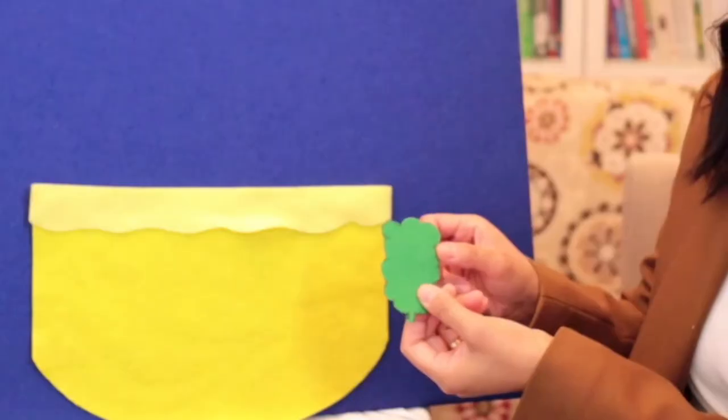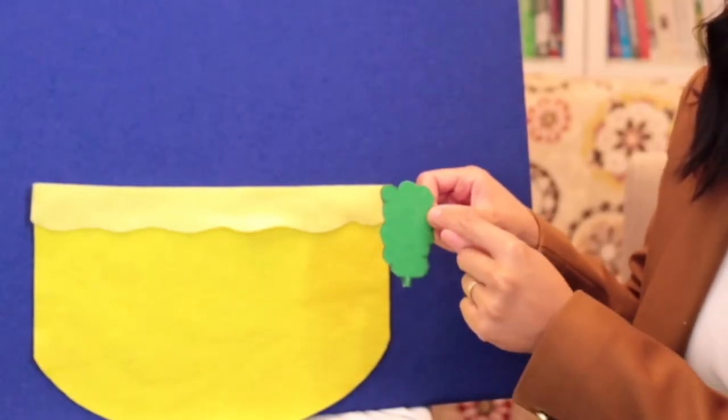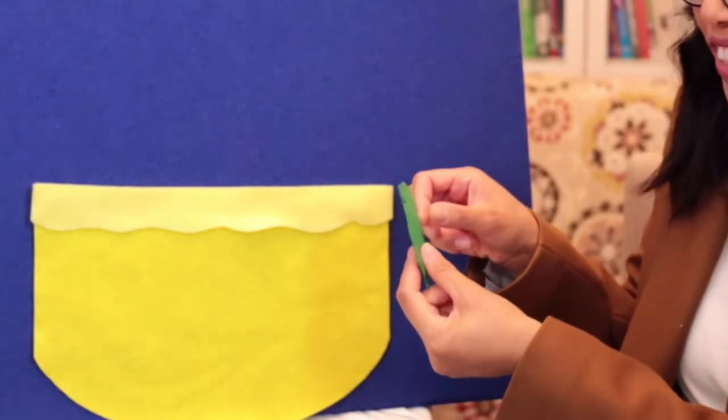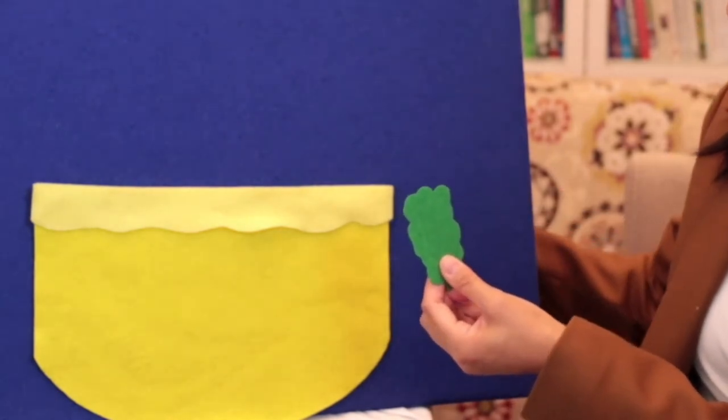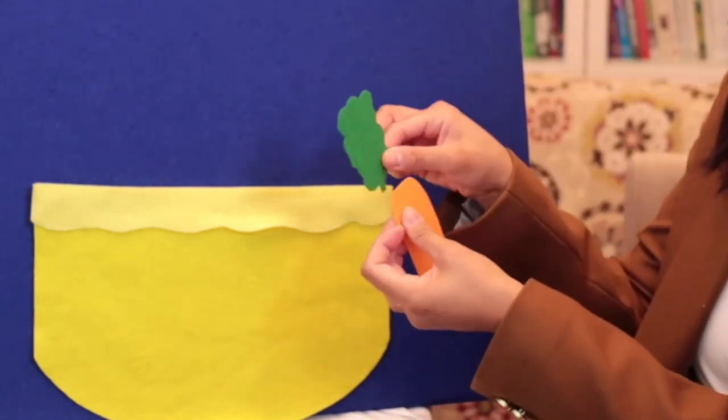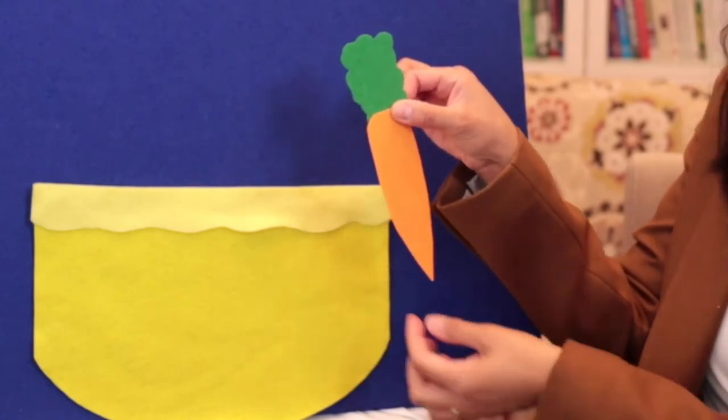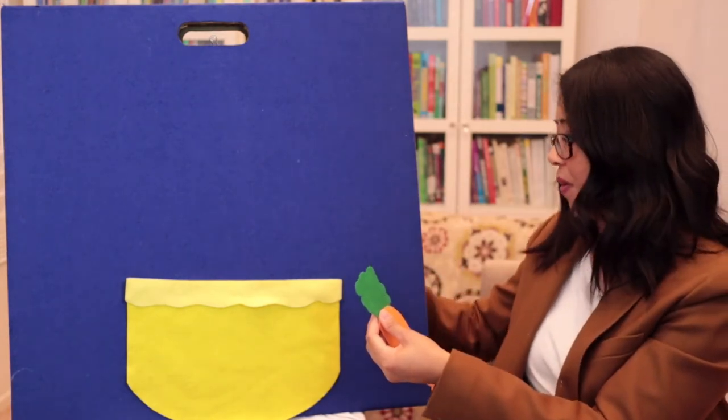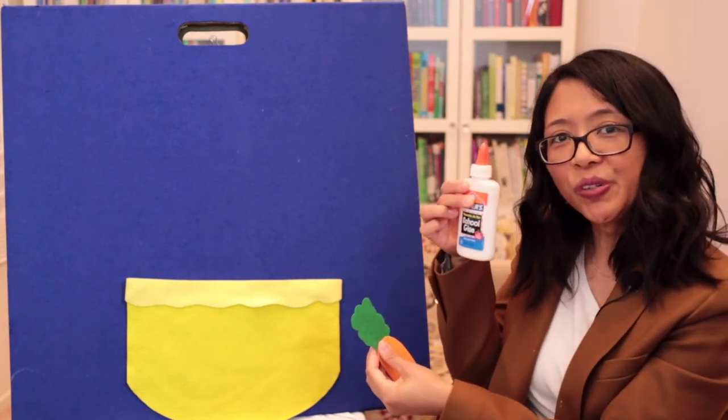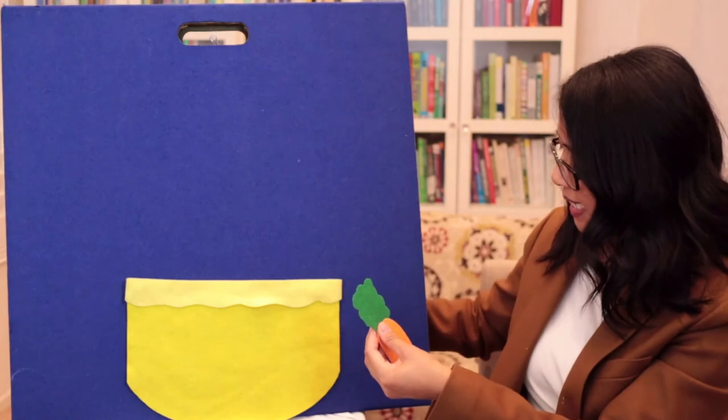And then, do you see how you can see the marker? So here's a little trick. Just turn it around and you can attach it to the carrot just like that. And you could use craft glue or school glue to put the pieces together.